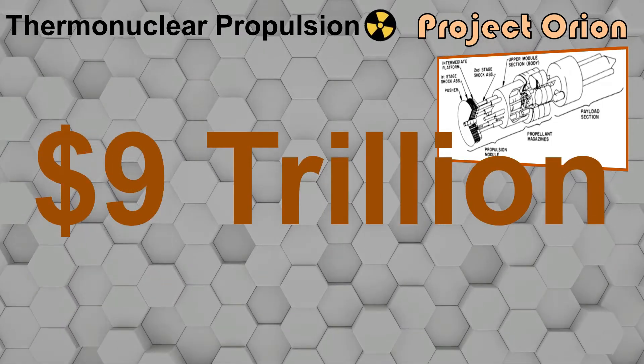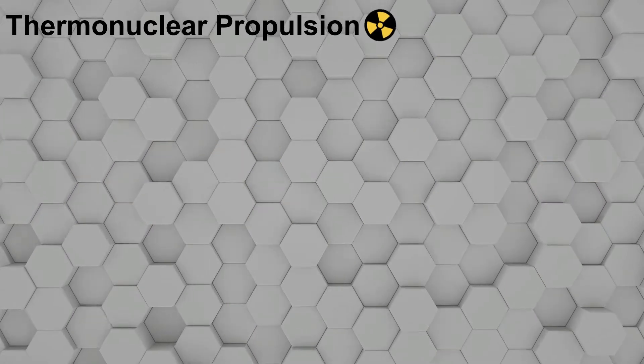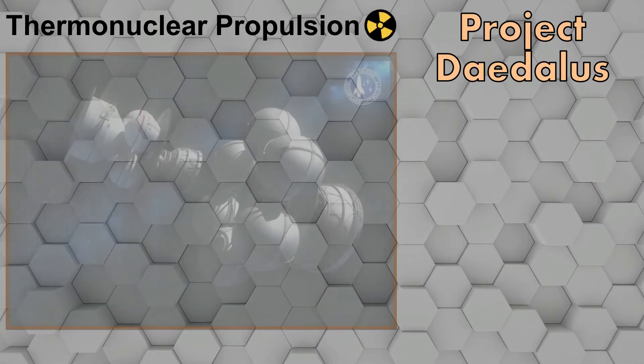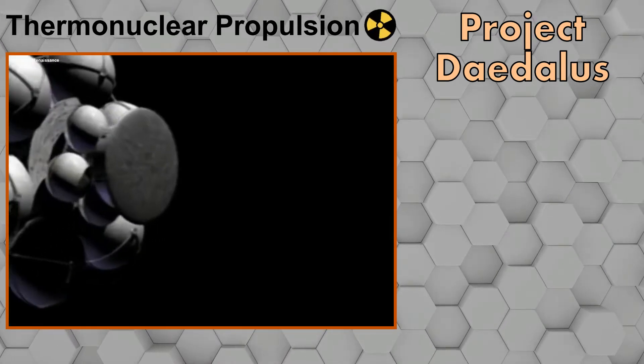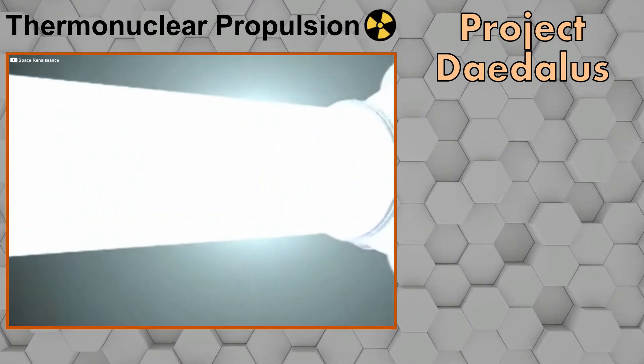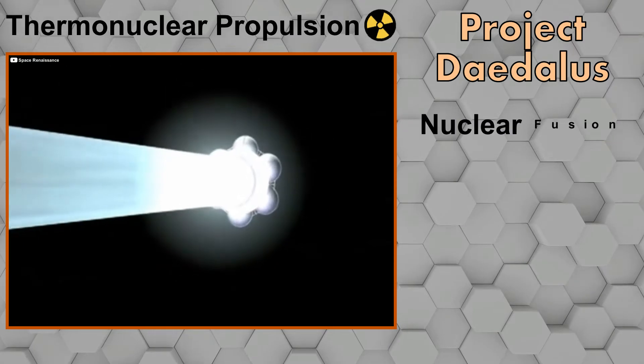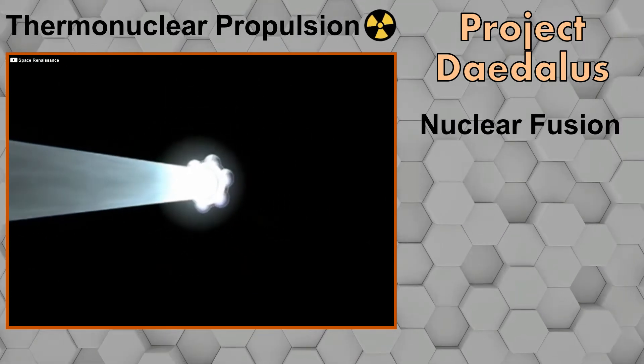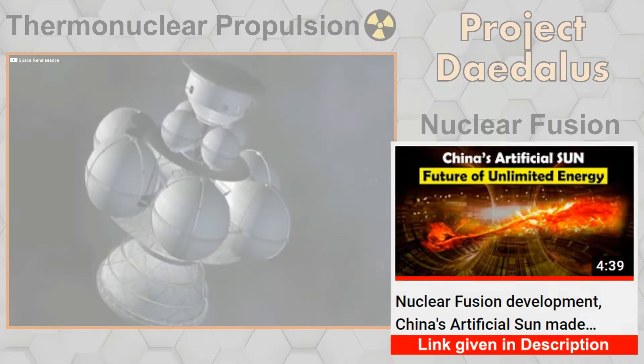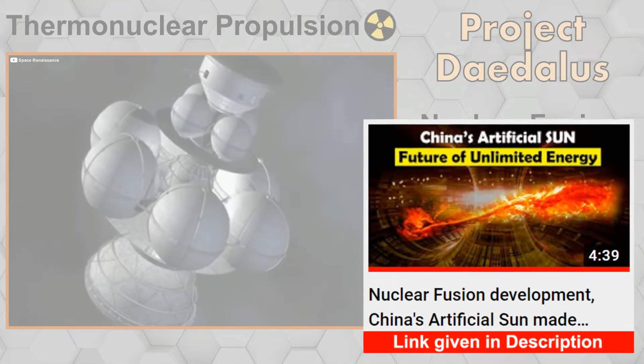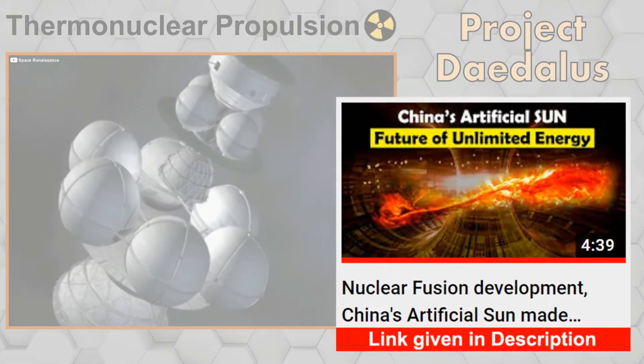There is another similar project proposed by British Interplanetary Society, Project Daedalus. Developed in 1970, Project Daedalus is a concept design of thermonuclear spacecraft which uses nuclear fusion instead of nuclear fission. Scientists currently have made some progress in achieving nuclear fusion. This video on China's artificial sun shows how close are we in achieving nuclear fusion.